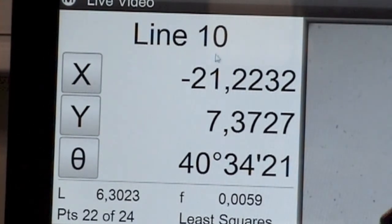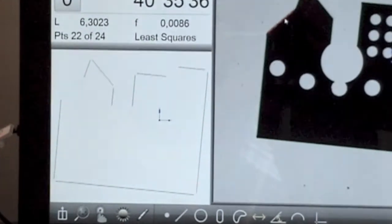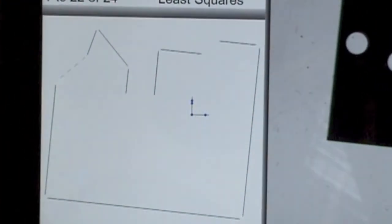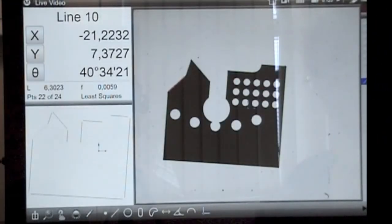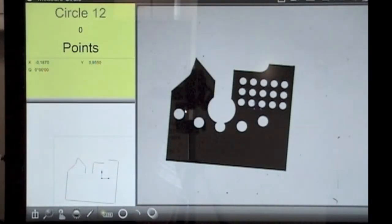In the bottom left hand panel you can now see the outline geometry of the component appearing in CAD format. This is showing all of the straight lines we have just identified. It's that simple.